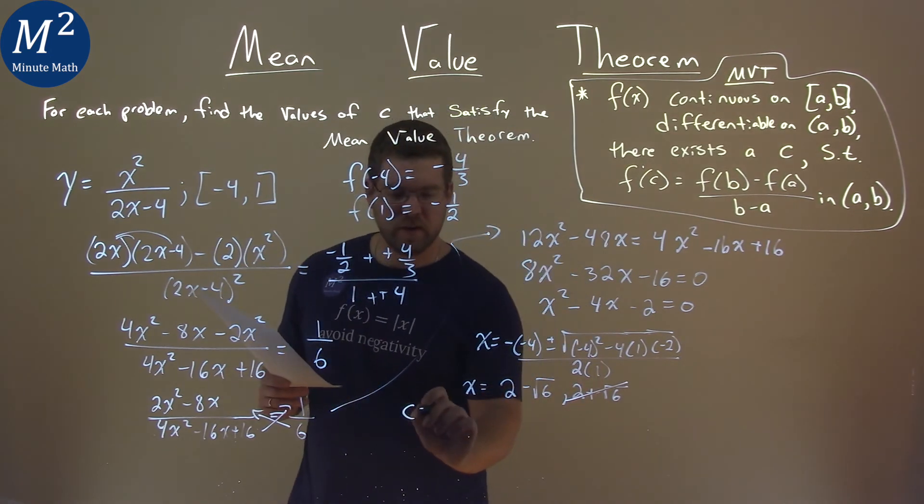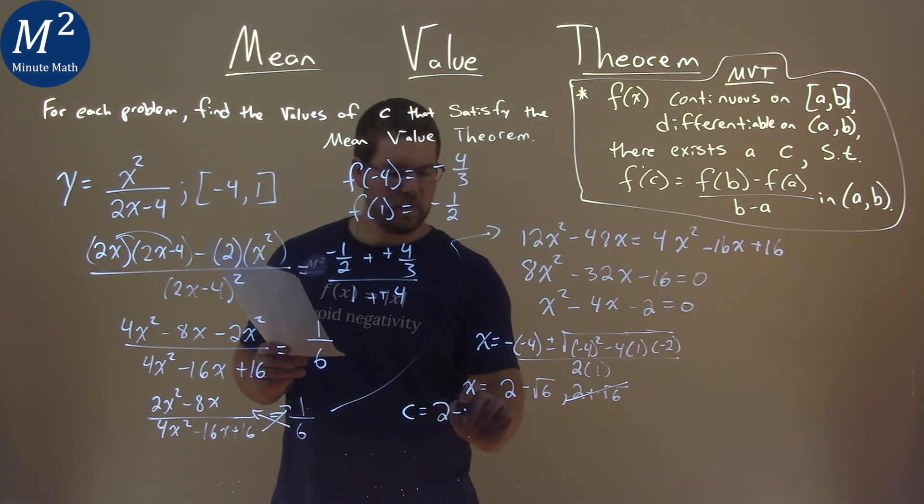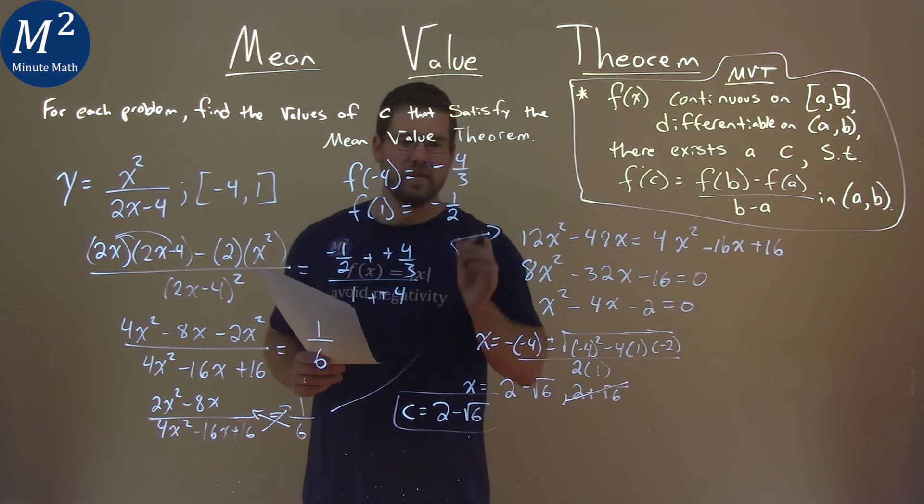So, we have 2 minus the square root of 6. And so, the c value here, the only one that we can use, is equal to 2 minus the square root of 6, and that is the c value that satisfies the mean value theorem.